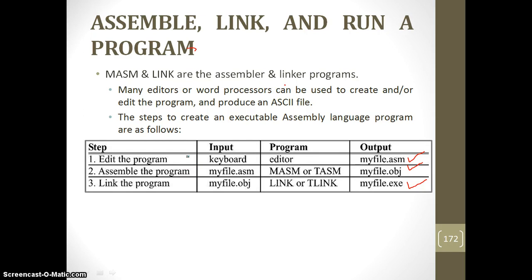With the help of MASM you can create the object file. To create the object file, type the command: masm /z space myfile.asm, then press Enter to create the object file. Then to link the object file to an executable file, use the linker. Type the command: link /codeview space filename.obj, then press Enter. It will create the executable file with the name filename.exe.